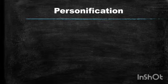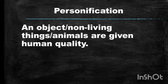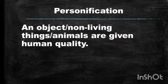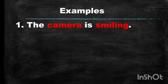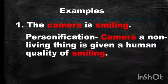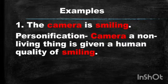The last figure of speech is personification. Let's see what personification is. An object, non-living thing, or animal is given a human quality. When objects, non-living things, or animals are given a human quality, that figure of speech is personification. The first example: 'The camera is smiling.' This is personification because a camera is a non-living thing, and it is given the human quality of smiling.